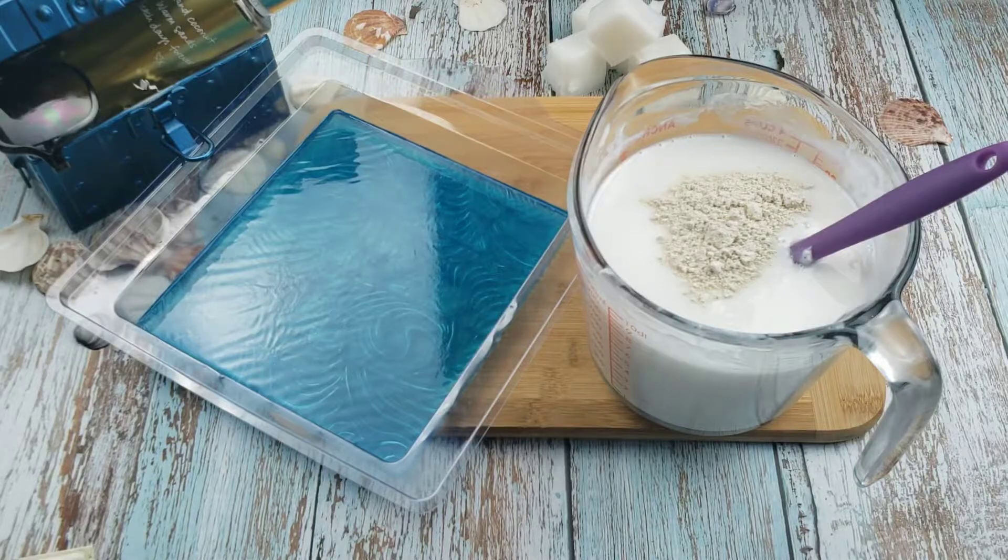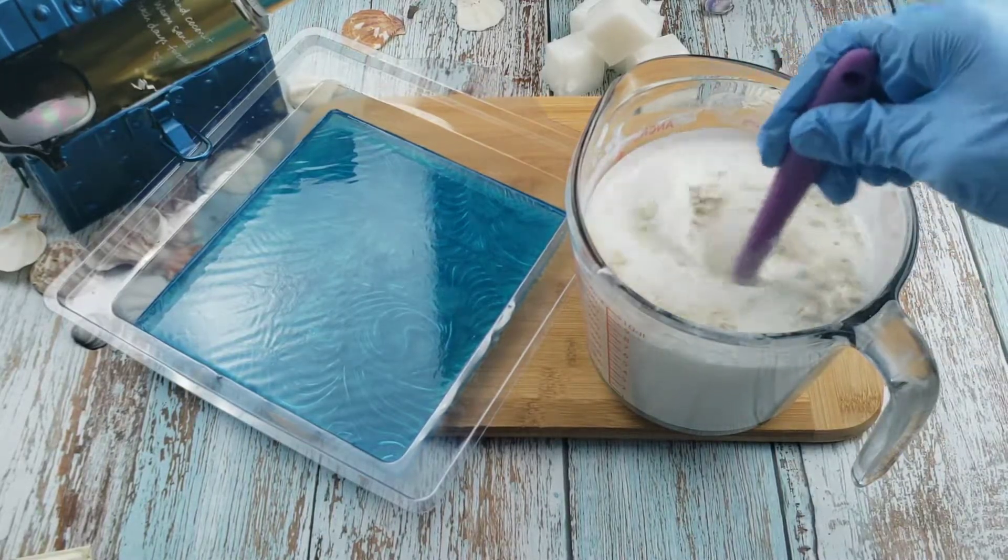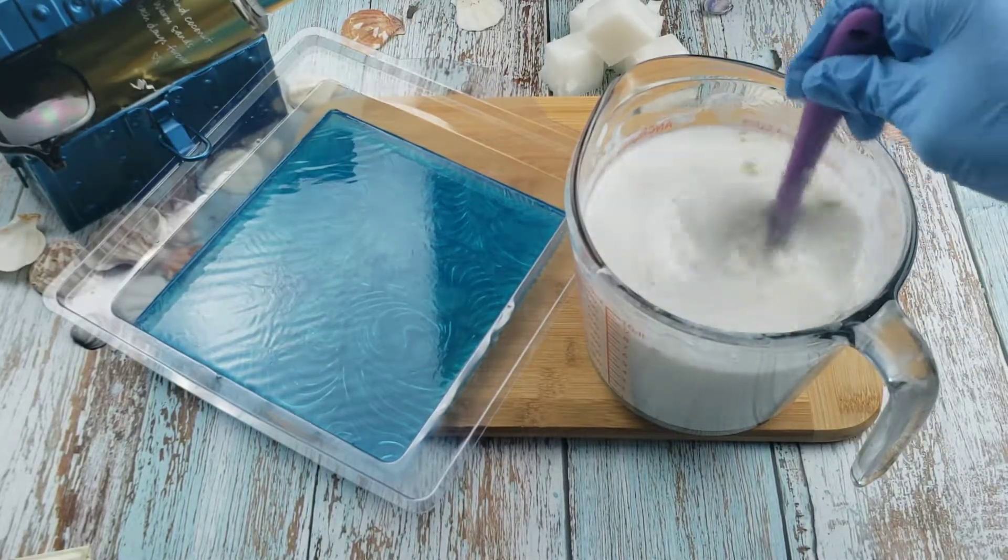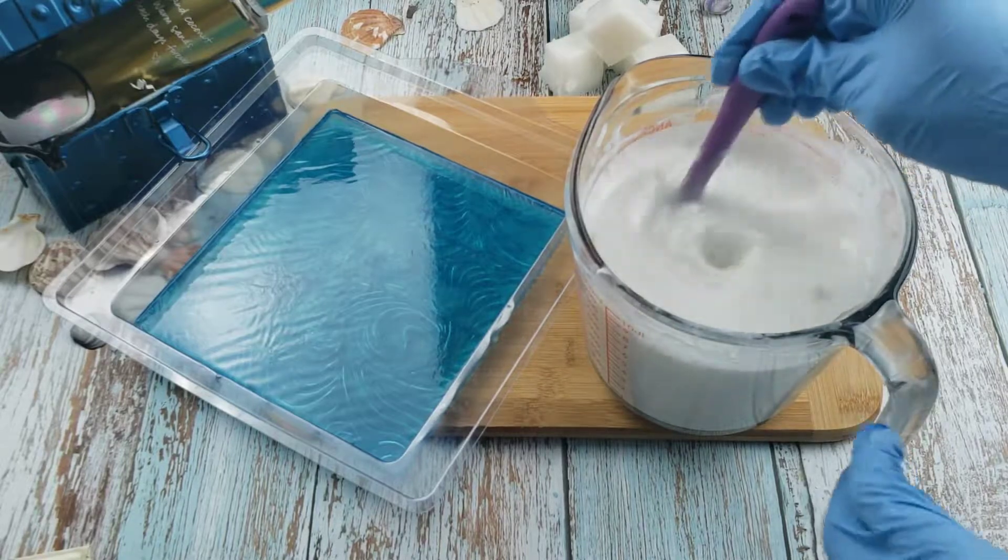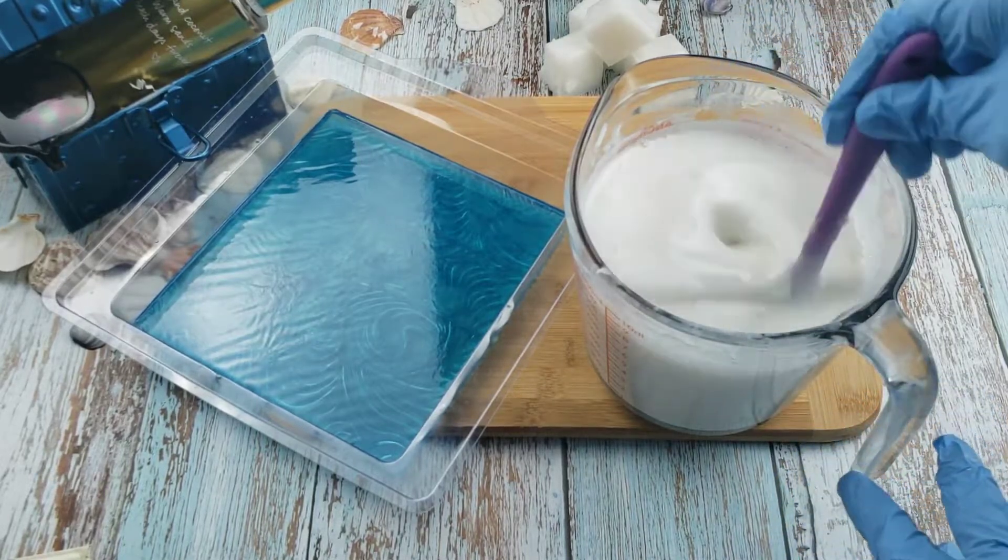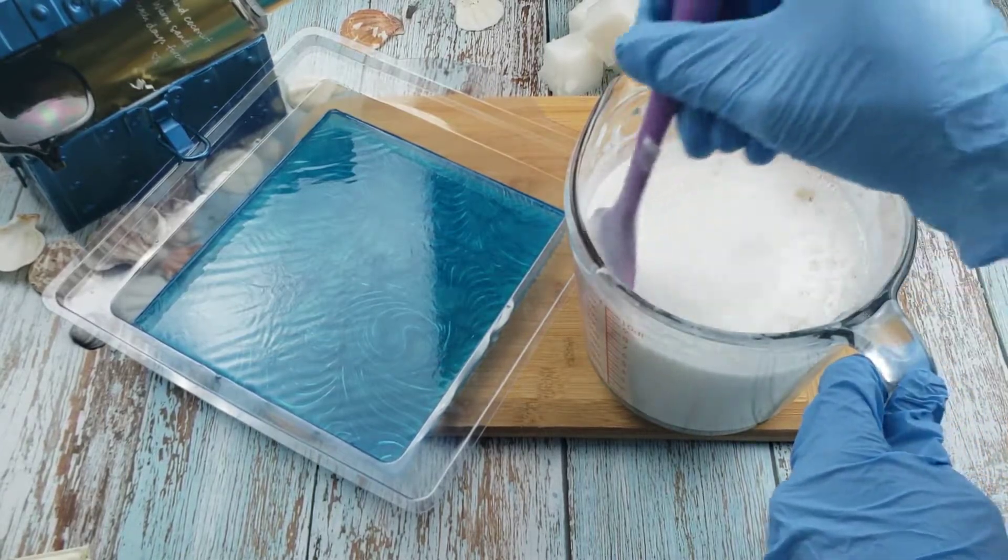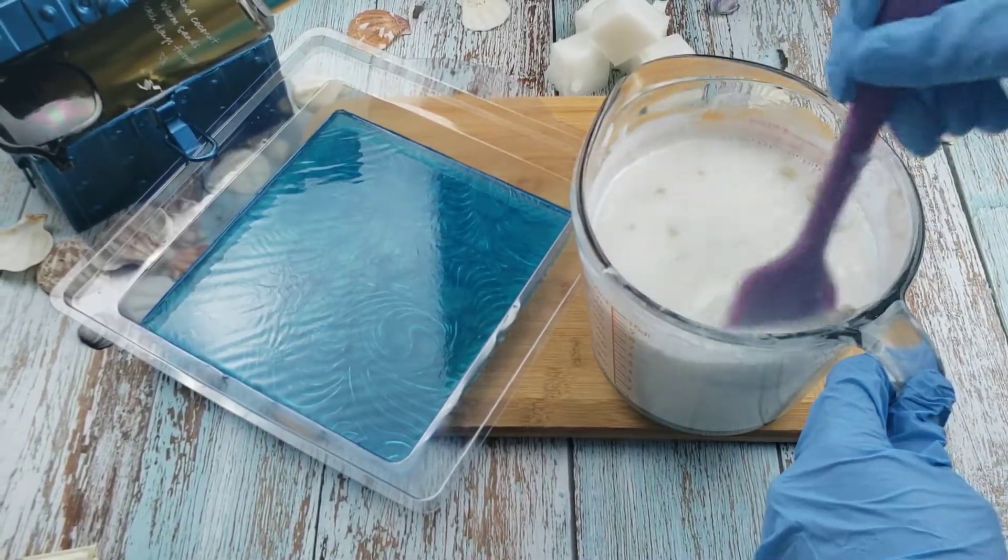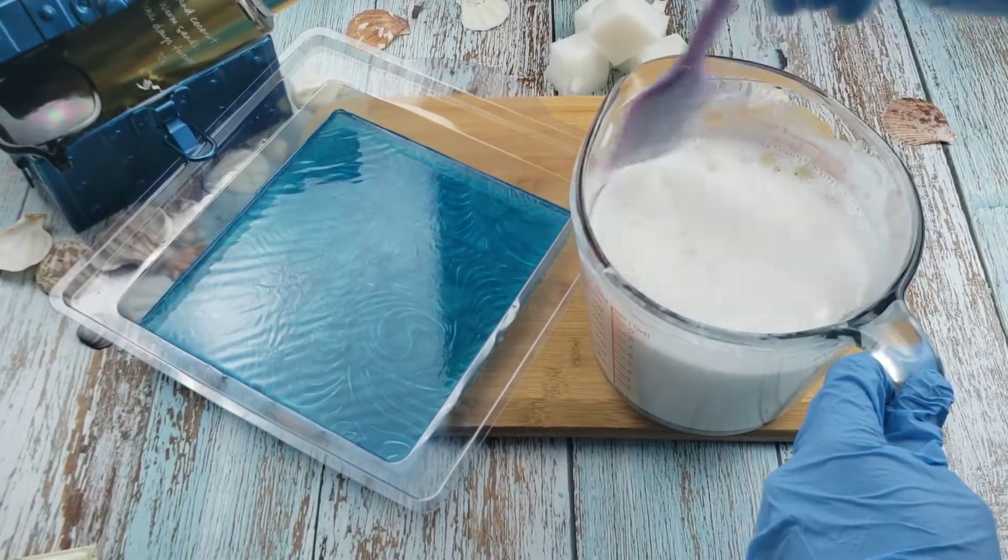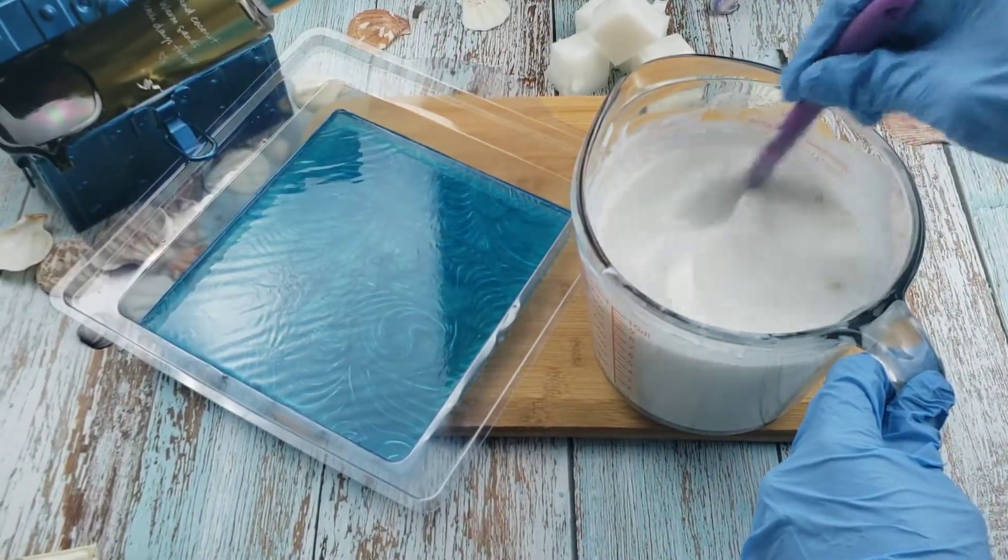Now the oats definitely clumped up when added to the base. I took my time to mix this in and break the clumps up. Still at the end there were some clumps that were left over, though you couldn't really see it in the final soap. Like the mica, adding a bit of alcohol to the oats before adding it to the base will help to alleviate the clumping.